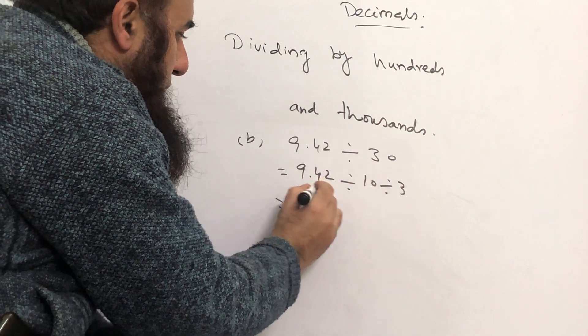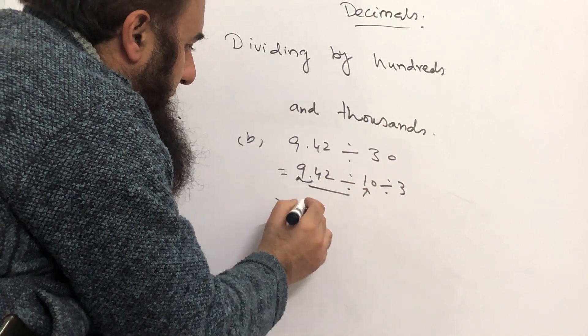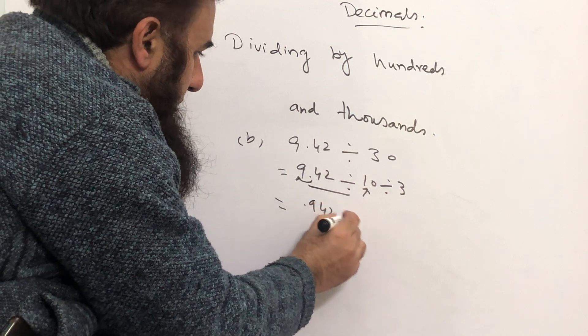So when we divide 9.42 by 10, the point will be shifted here. It becomes 0.942 divided by 3.